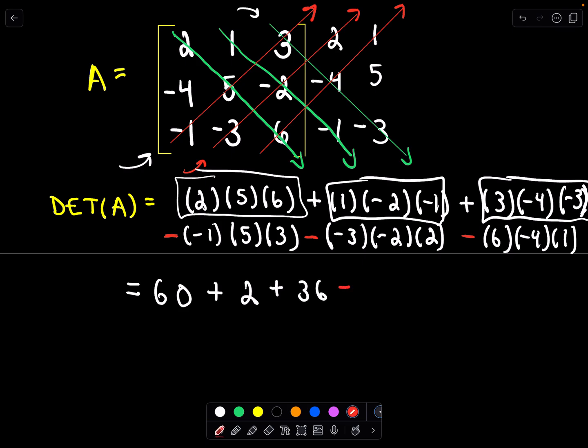And then let's see. We've got our minus sign. So negative 1 times 5 times 3. That's going to be negative 15. And then my next minus sign right there. So negative 3 times negative 2 times positive 2. That's going to be 6 times 2 or 12.